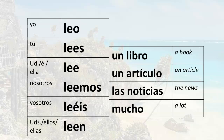Now the fun part — let's put it all together. If I want to say I read a book, I would say leo un libro. Remember leo un libro can mean I read a book, I do read a book, or I am reading a book, depending on the context. Leo un artículo — I read an article. Leo las noticias — I read the news. Leo mucho — I read a lot.